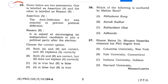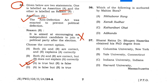Question number 33: Two statements — Assertion A and Reason R. Assertion A: The Anti-Defection Act was enacted to prevent political defection. This is true. Reason R: It is aimed at encouraging an independent candidate to join a political party after the election. This is wrong. Answer: Assertion A is true but R is false — option C.